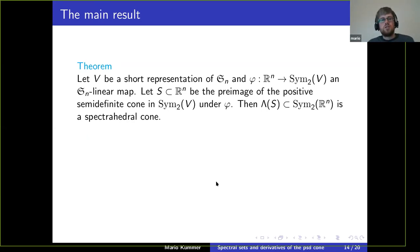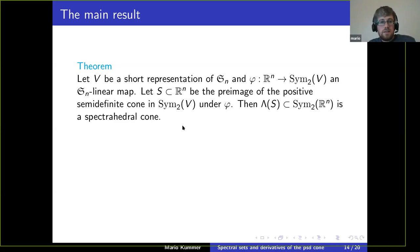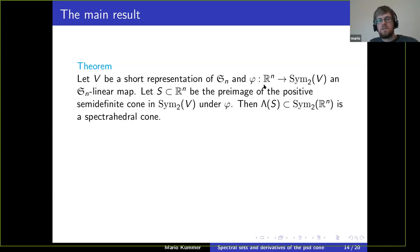Now that we know what a short representation is, the main result is: if we have a short representation of S_n and a linear map from R^n to the set of symmetric bilinear forms over a vector space V, compatible with the respective actions of S_n, then the pre-image of the set of positive semi-definite bilinear forms will be a symmetric spectrahedral cone in R^n.